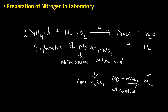Preparation of Nitrogen in Laboratory: A mixture of ammonium chloride and sodium nitrite in aqueous solutions are mixed and heated to get nitrogen gas. The so-prepared nitrogen gas has impurities of nitric oxide and nitric acid. The impurities can be removed by passing the gas through concentrated sulfuric acid, which absorbs nitric oxide and nitric acid, giving us pure nitrogen gas.